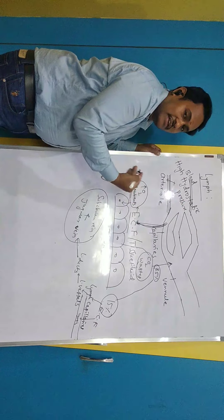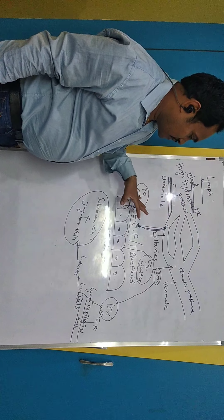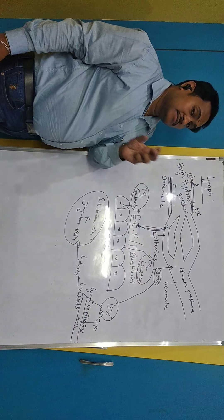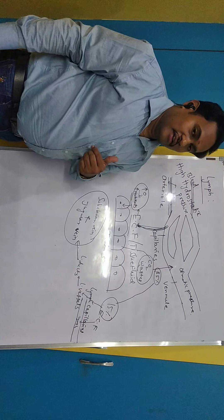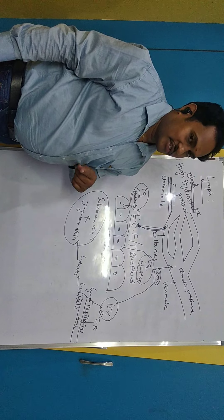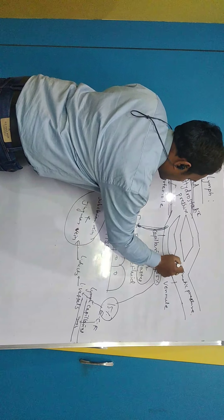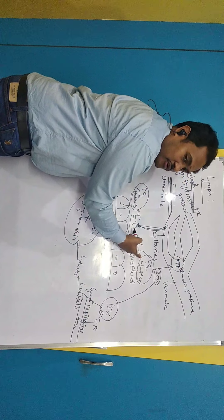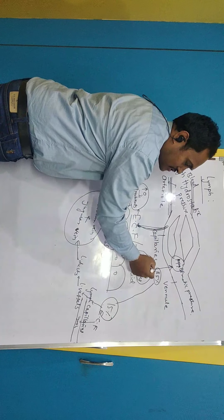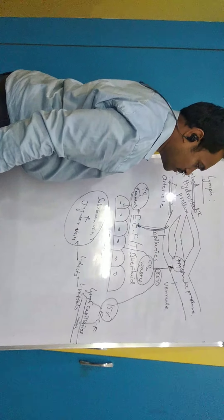When blood comes out, it carries plasma proteins, RBCs, and WBCs which are larger in size, so they cannot come out — only the liquid portion exits. Among the dissolved components, plasma proteins like albumin are relatively large and remain inside. Albumin is responsible for osmotic pressure. Because albumin and plasma proteins are more concentrated inside the vessel, the osmotic pressure inside is higher.